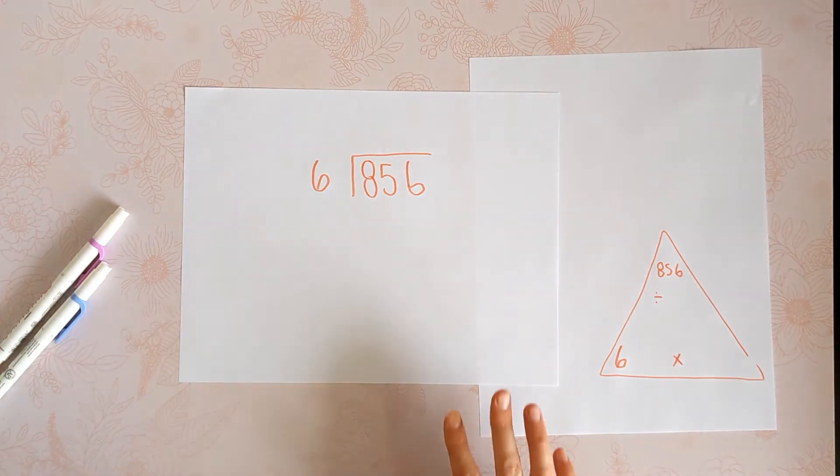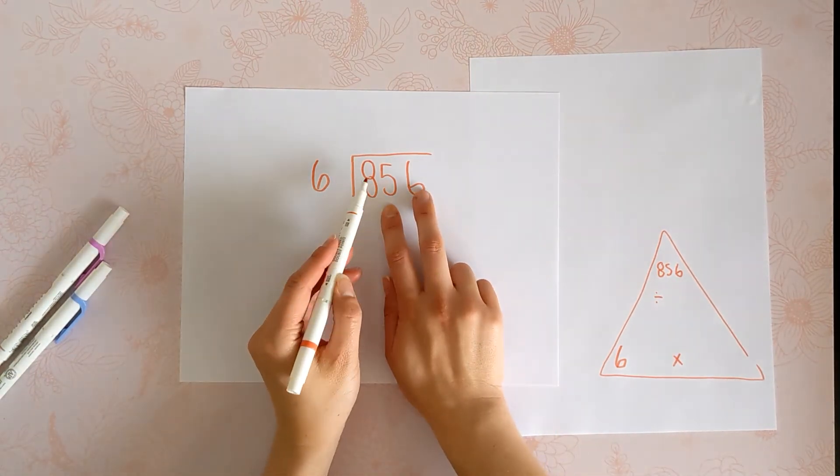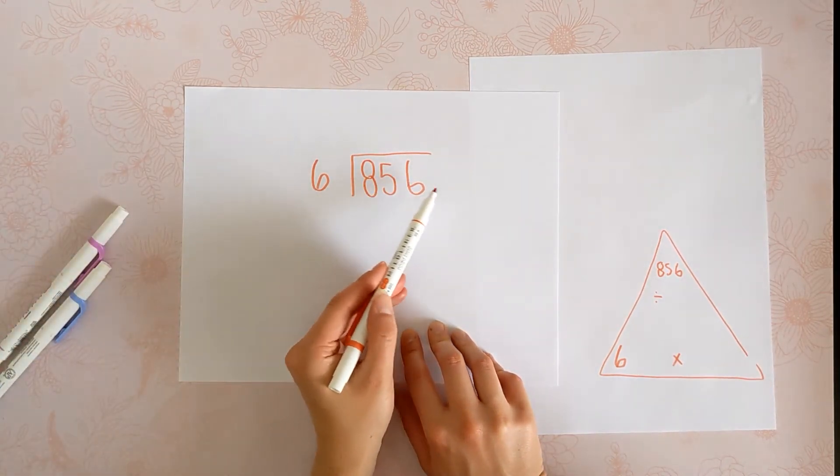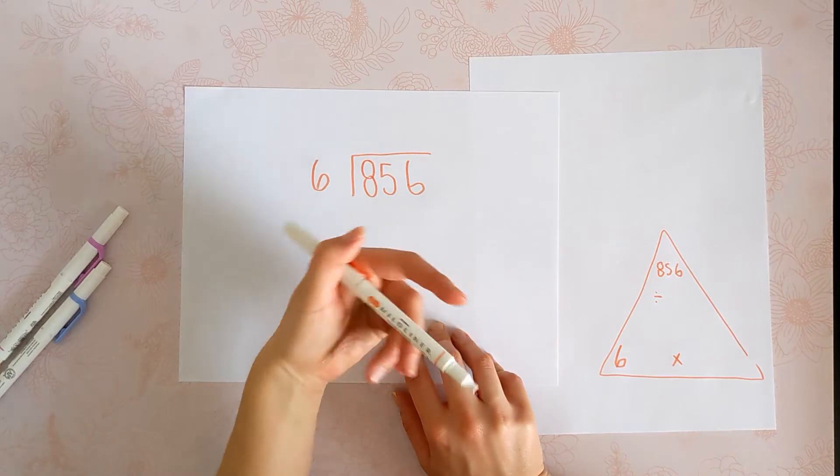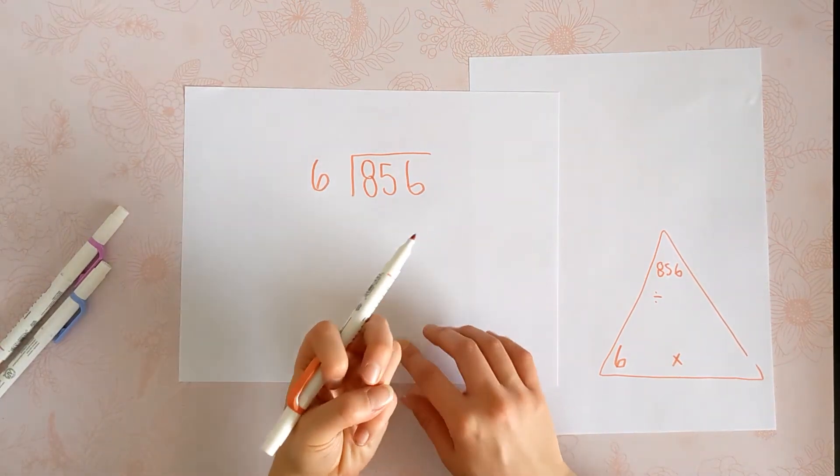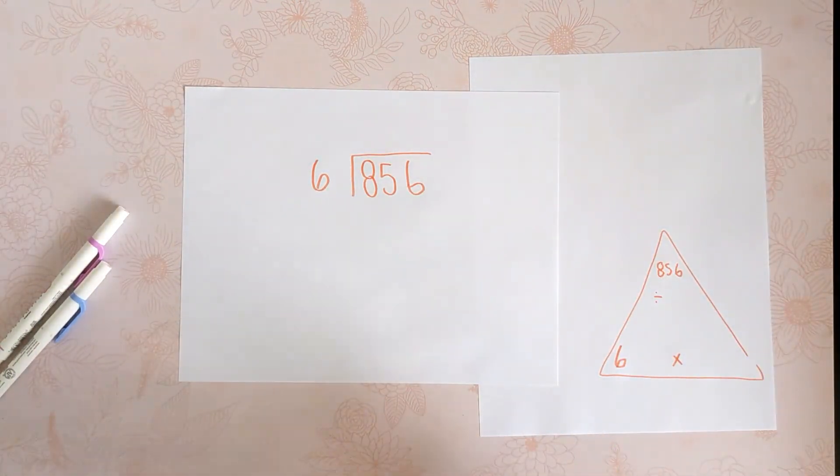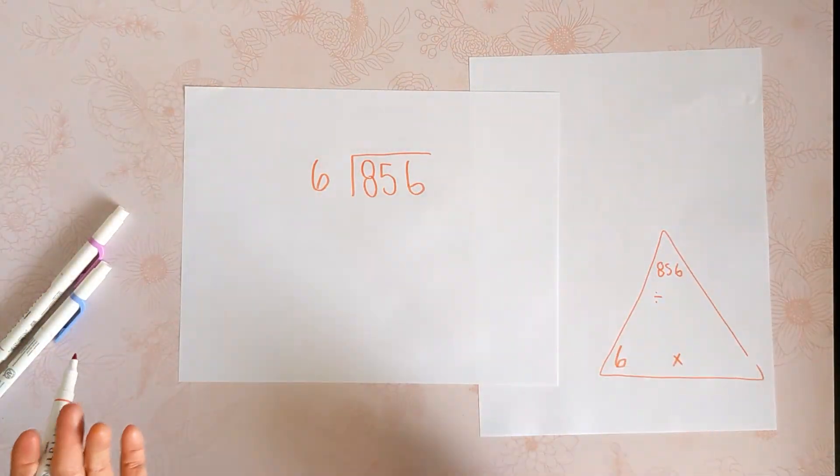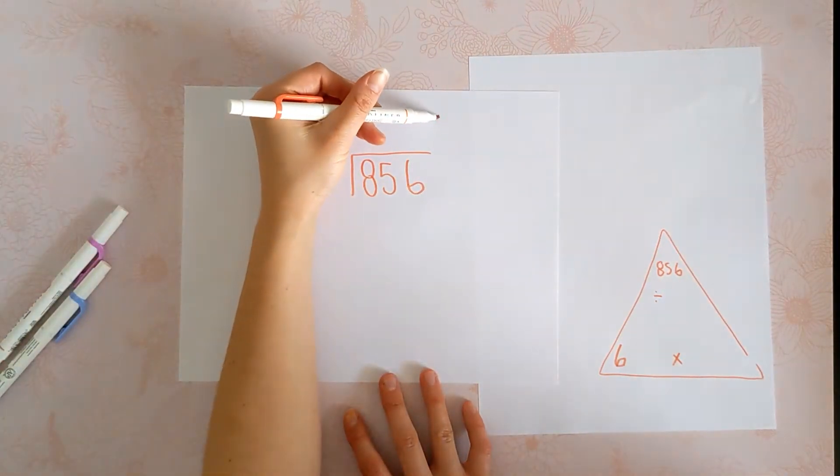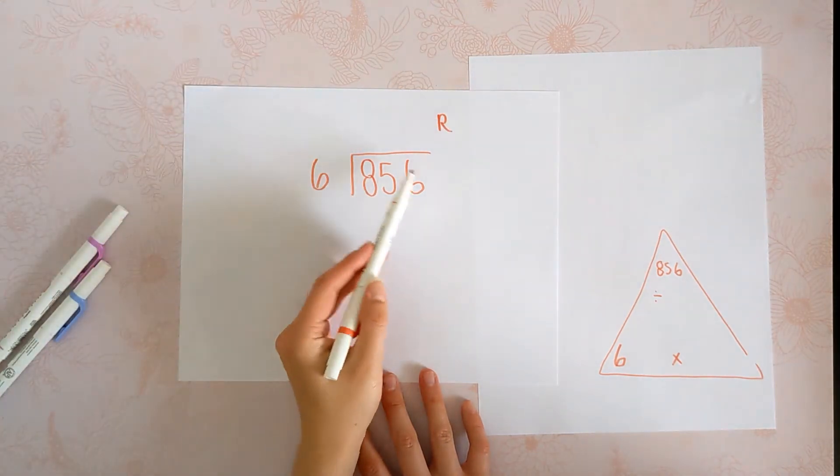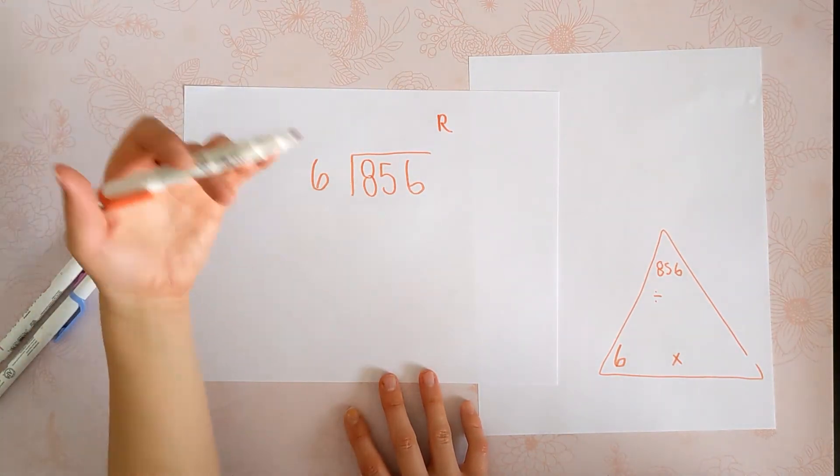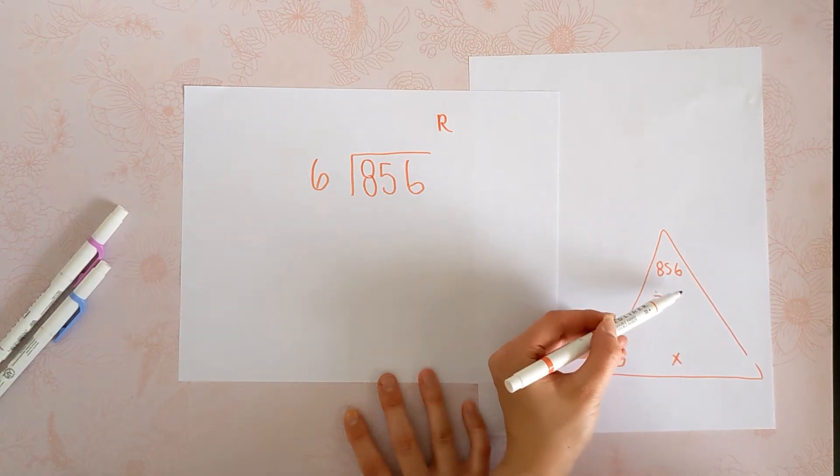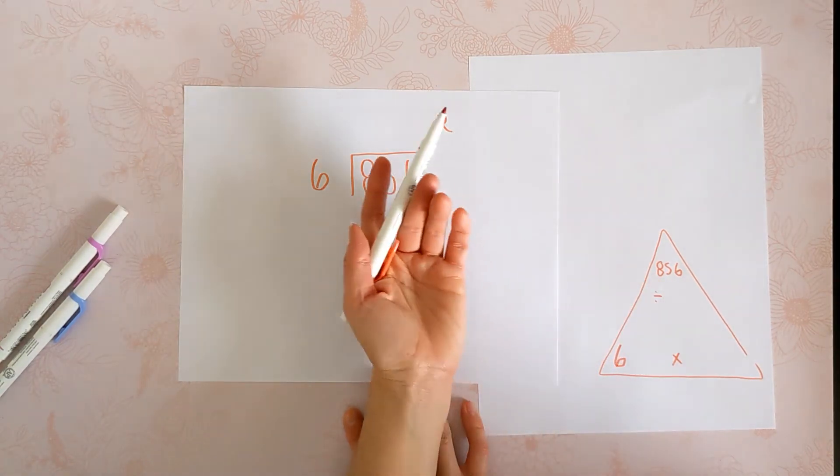Now, this number cannot actually be divided equally by 6. So if I had 6 friends and I had 856 pieces of candy and I was dividing them up, I would end up with some leftover that I can't share equally with my friends. So I'm going to have a remainder, and that just means that I can't divide it up equally, but I can get close.